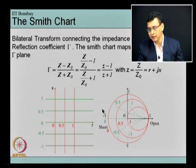This straight line is converted to this circle, this constant reactance straight line is converted to this constant reactance circle, this constant resistance straight line is converted to this constant resistance circle.